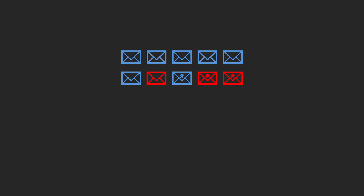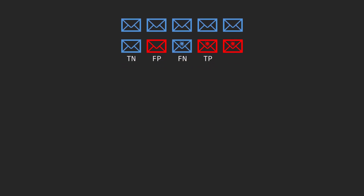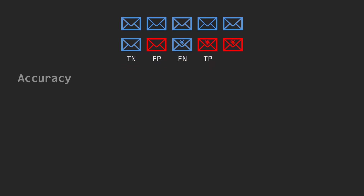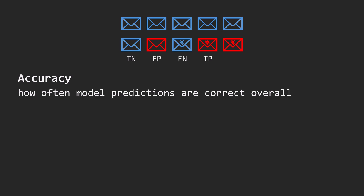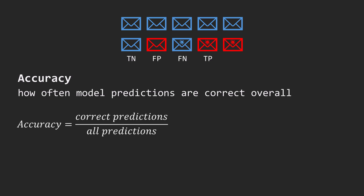The first metric, accuracy, is very common. It measures how often model predictions are correct overall, and is calculated as the number of correct predictions divided by the total number of predictions.